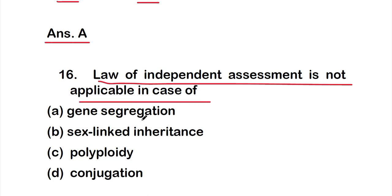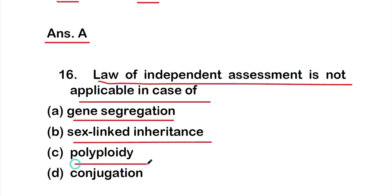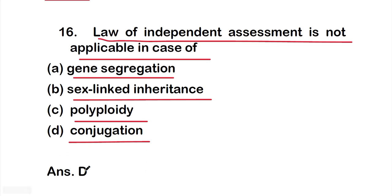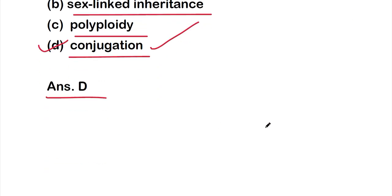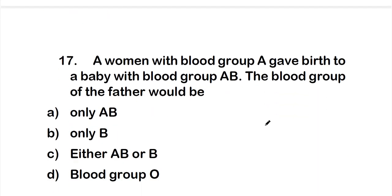Question sixteen: the law of independent assortment is not applicable in the case of — option A: gene segregation, option B: sex-linked inheritance, option C: polyploidy, or option D: conjugation. The right answer is option D, conjugation.